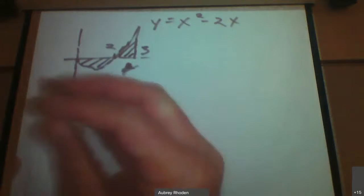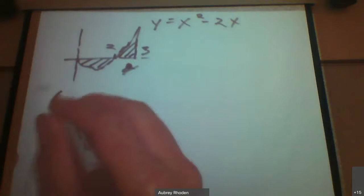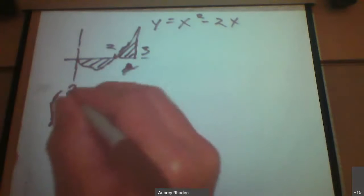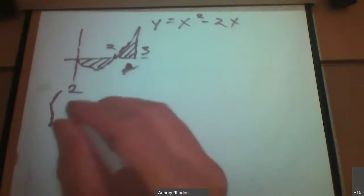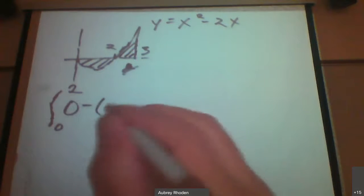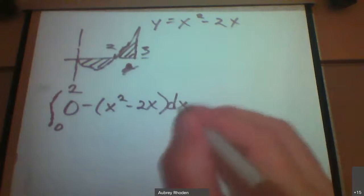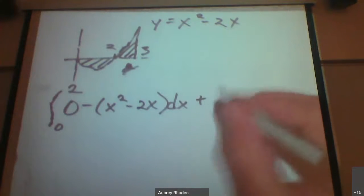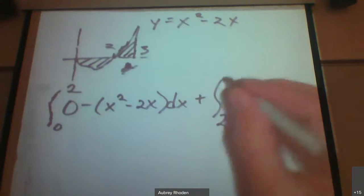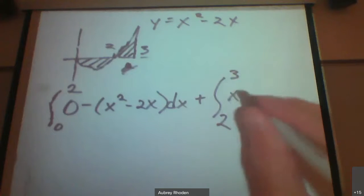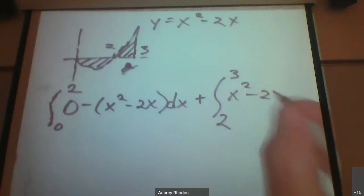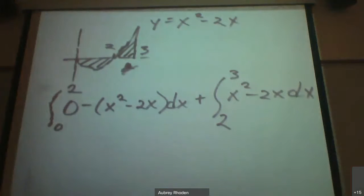So we're going to have the integral now from 0 to 2. This is going to be 0 now minus x squared minus 2x dx. And then we're going to add in the area from 2 to 3, those x squared minus 2x. You can think of this as x squared minus 2x minus 0, but the 0 is a little redundant.